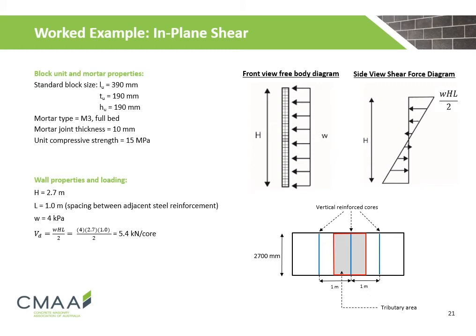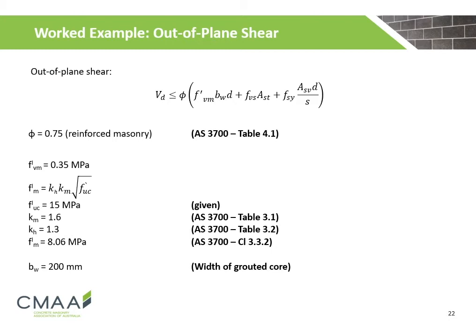We will confirm that the out-of-plane shear capacity is greater than the design loading. This wall uses standard block units with a unit compressive strength of 15 MPa. With a 4 kPa out-of-plane loading, the shear force acting on the 2.7 m high wall is calculated to be 5.4 kN per core. The shear diagram and the tributary area applicable to a grouted core are shown on the right. For out-of-plane shear, the capacity reduction factor phi is 0.75 from table 4.1 of AS3700. The characteristic shear strength of the masonry is 0.35 MPa. With face shell bedding of M3 mortar, the characteristic compressive strength of the masonry unit is calculated to be 8.06 MPa.